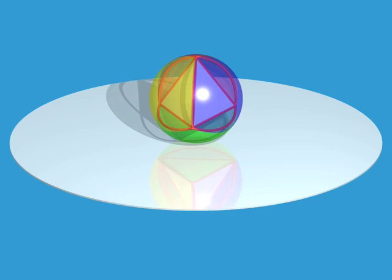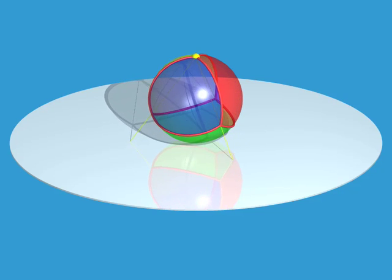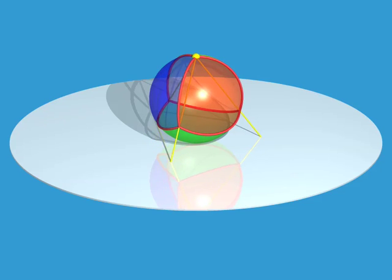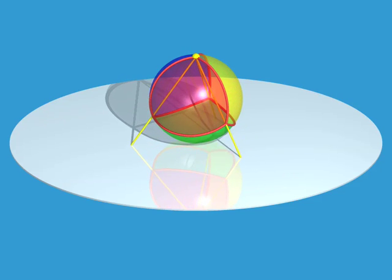This time, we'll inflate the polyhedron until its faces lie on a hypersphere in four-space, and project stereographically back into our own three-space.